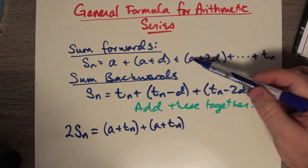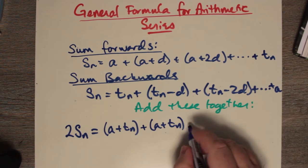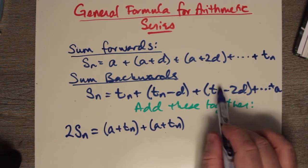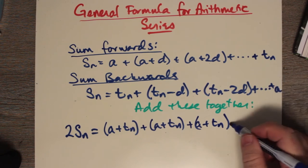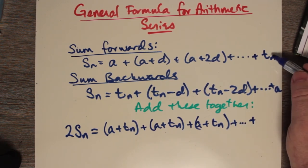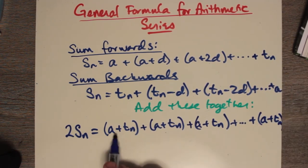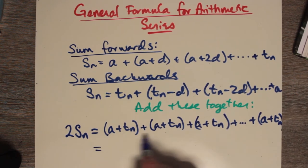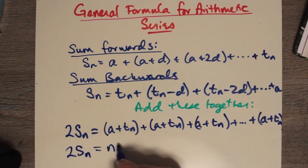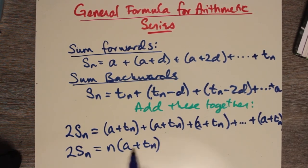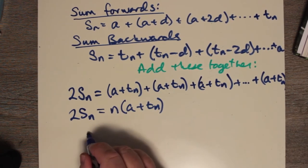We get a plus tn like before, and then 2d minus 2d cancels out, so we just get another a plus tn. We proceed on and finally our last term is tn plus a. Notice that a occurs n times and tn occurs n times, so 2Sn equals n multiplied by a plus tn. Now we divide both sides by 2, and our general formula is Sn = n/2 times (a + tn).